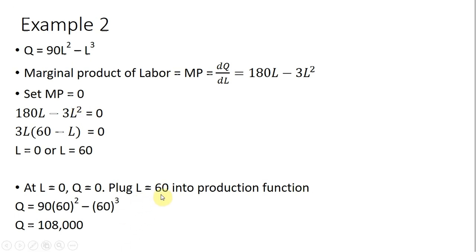So if we plug L equals 60 into the production function, we must have our maximum value for output, and doing that, we find that output equals 108,000 units.